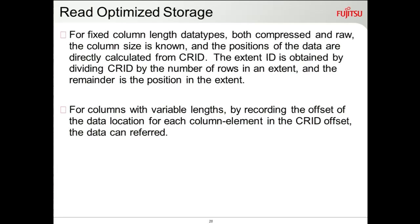For fixed-length column data types, whether compressed or raw, you can directly calculate the position from the CRID using the data length. Because the extent has a fixed number of records with a fixed record size, you can directly point to the exact location. For variable-length data, you go to the offset, get the offset location, and navigate to the page where the data resides.